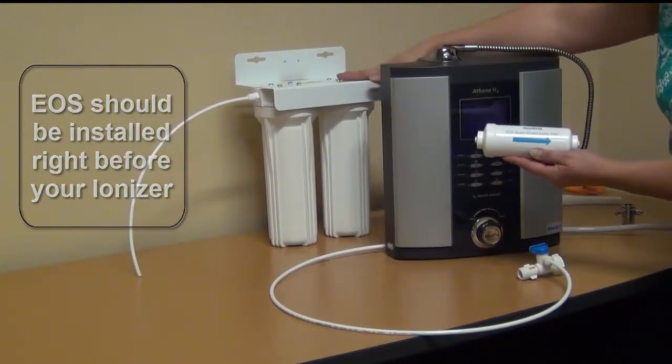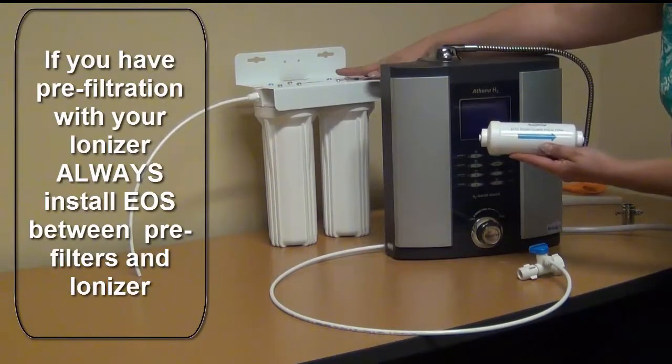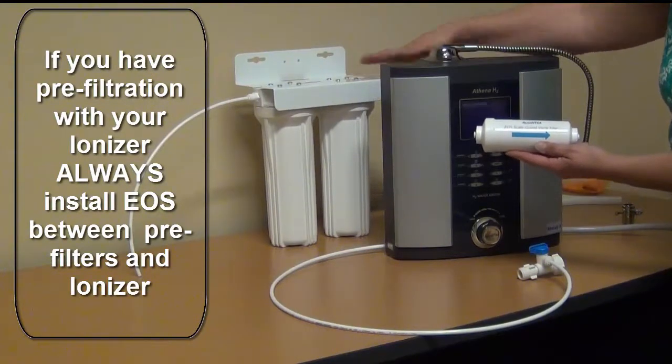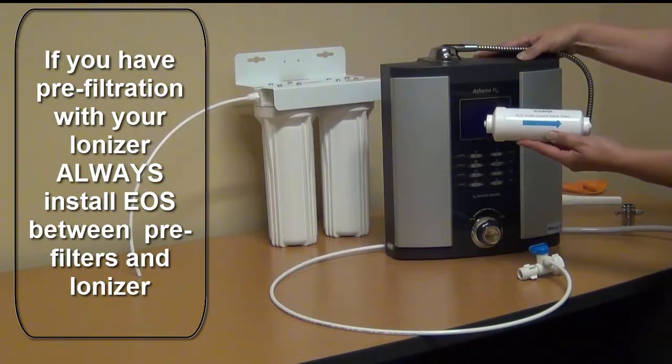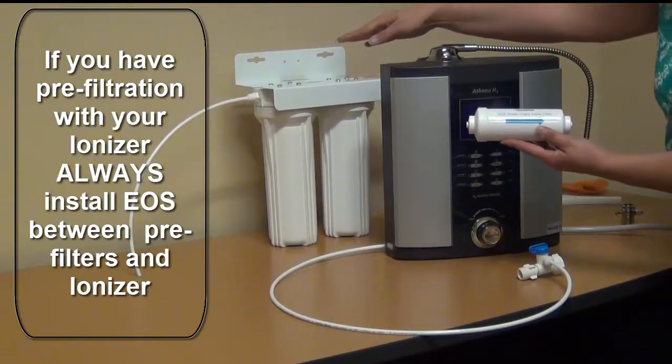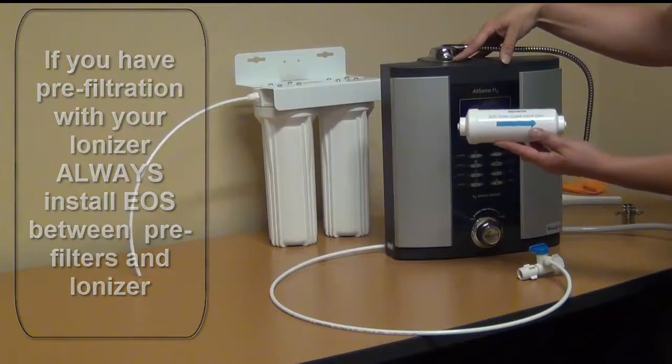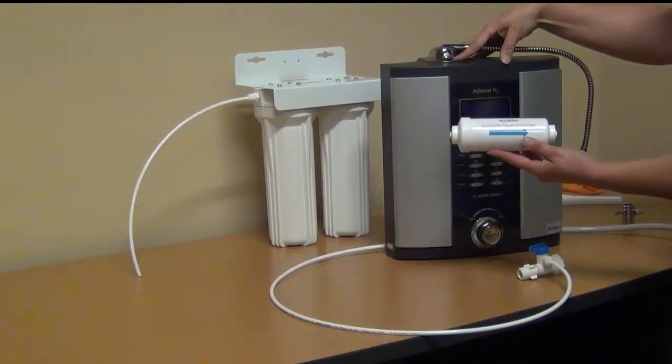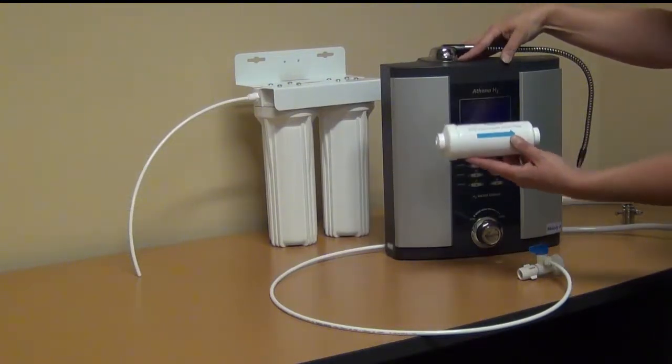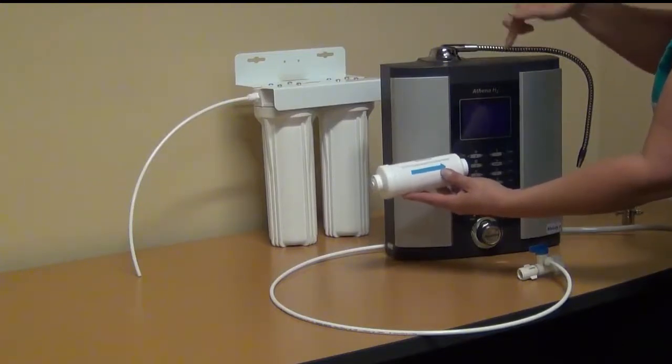If you have pre-filtration, like external filters, already installed with your ionizer, the EOS will be installed between the pre-filters and your ionizer. The EOS Scale Guard filter is always the last filter before the water reaches your ionizer.